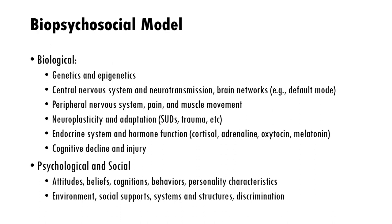Biological factors include a person's genetics and epigenetics, the central nervous system and neurotransmission, brain networks, the peripheral nervous system, pain and muscle movement, neuroplasticity and adaptation seen in substance use and trauma, the endocrine system and hormone function including cortisol, adrenaline, oxytocin, and melatonin, and cognitive decline and brain injury. All of these are examples of biological factors that may be associated with or even causal to mental health symptoms.